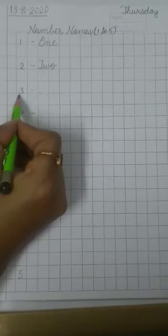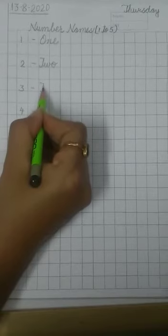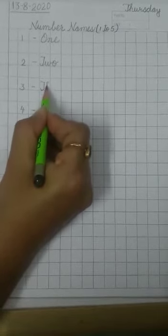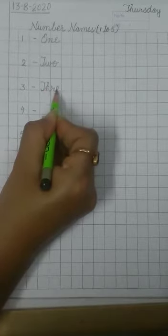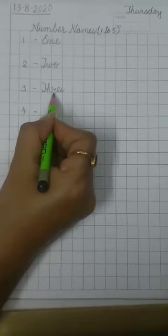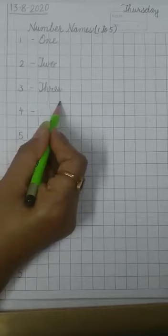Write number 3. Put a small dash here. Write capital T like this. Small H R E E. T H R double E. 3. Again leave a line here.